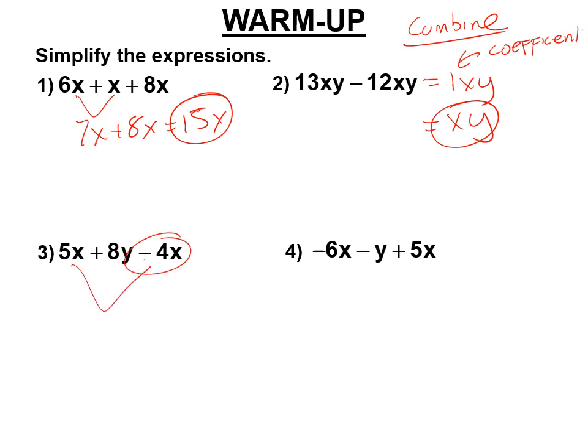5x minus 4x, the minus goes with the 4x, and that makes 5x minus 4x is 1x, which we write as x. We got to make sure we put the plus 8y in the answer. We put things in alphabetical order. So you're going to write x plus 8y. Negative 6x plus 5x is negative 1x, but we don't write negative 1x, we write negative x. And then minus y just comes in the answer. It's negative x minus y.